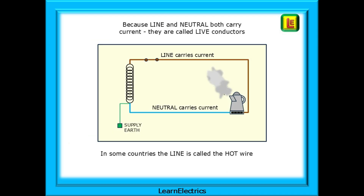And lastly, for this video: what is a live conductor? Because line and neutral both carry current, they're called live conductors — they're both current-carrying conductors in normal, fault-free conditions. Line is a live conductor, neutral is a live conductor. In some countries, the line conductor is called the hot wire. In a UK three-pin plug, there are two live conductors plus an earth — but don't get them the wrong way round.